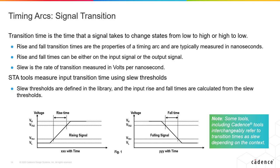Transition times such as the rise and fall times are measured in terms of time, typically in nanoseconds. STA tools measure input and output transition time using slew thresholds. These slew thresholds are defined in the library, and the input rise and fall times are calculated from the slew thresholds.